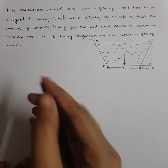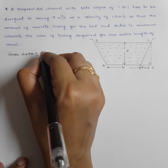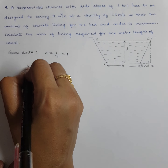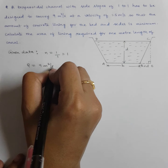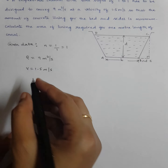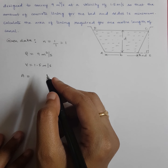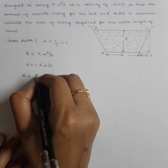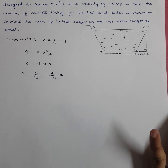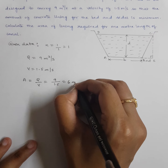Given data: side slope n equals 1, discharge Q equals 9 m³/s, velocity V equals 1.5 m/s. Since Q equals A·V, area A equals Q/V equals 9/1.5 equals 6 m².